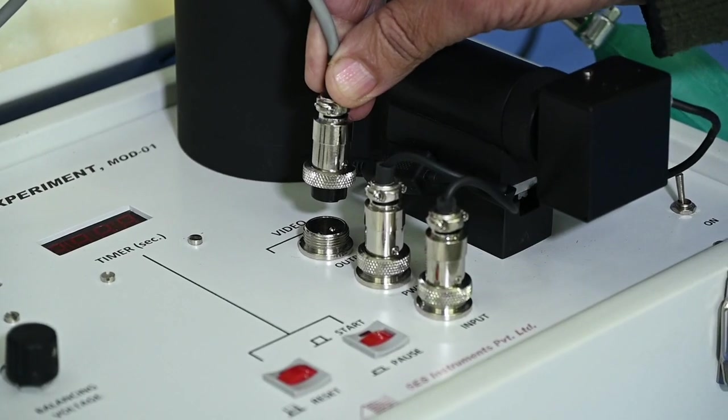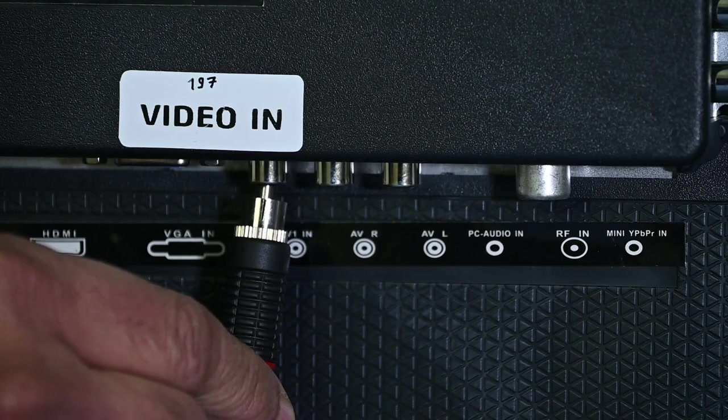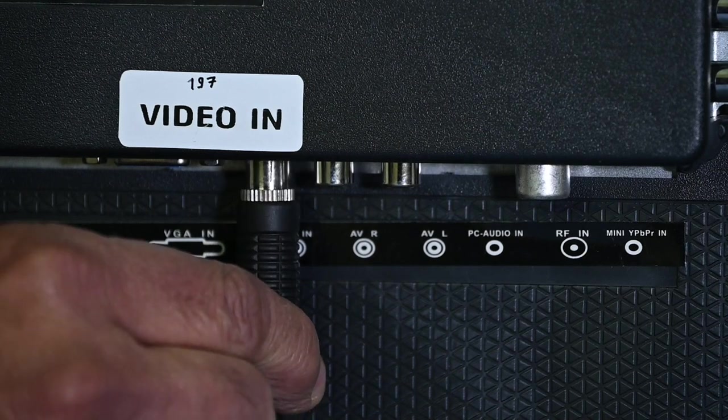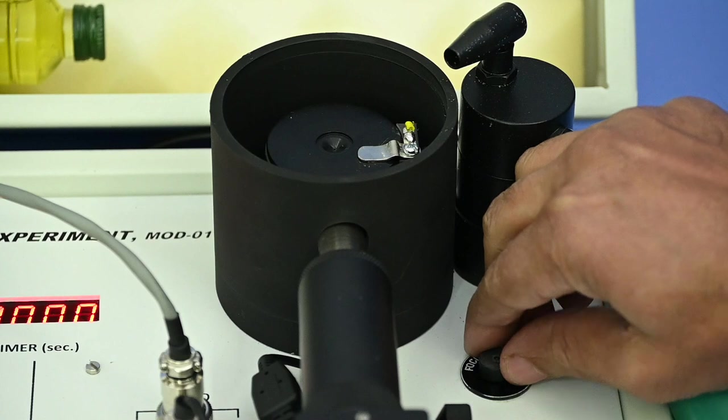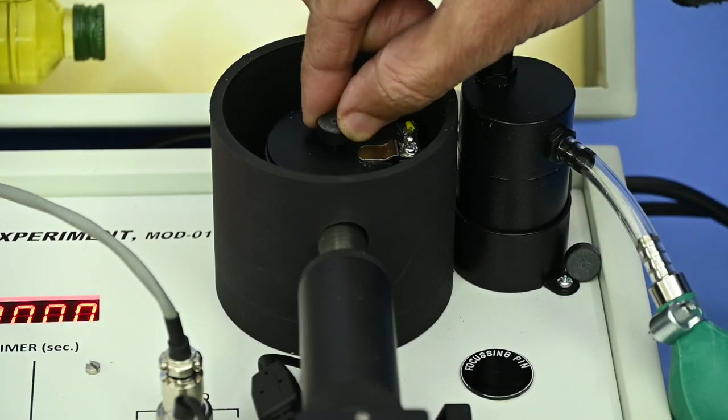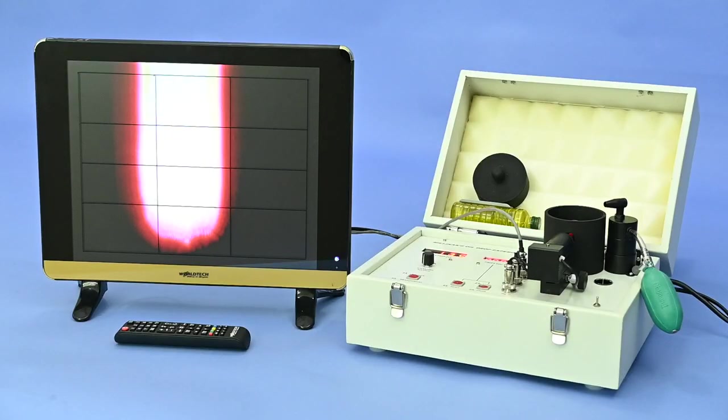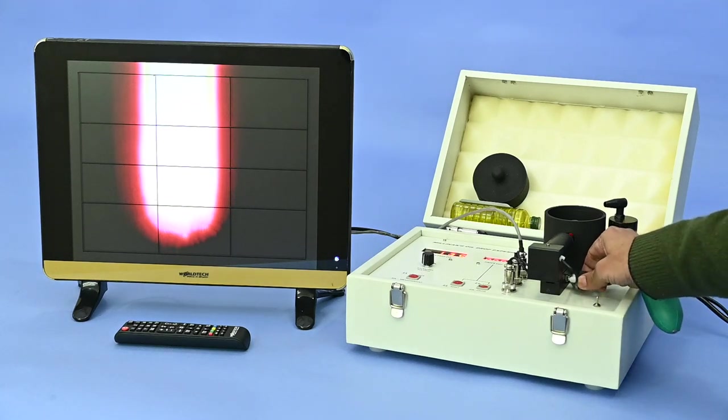Connect video output of the main unit with LCD monitor using the given cable. Place the focusing pin in the center hole of the upper plate and get its image on monitor. Adjust its focus with the help of focusing knob of the camera.